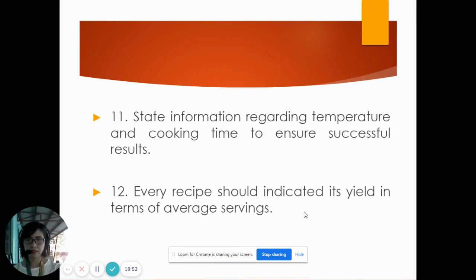Number eleven: state information regarding temperature and cooking time to ensure successful results. For example, bake for 25 minutes at 350 degrees Celsius until it is golden brown. This is applicable when you bake a cake or bake bread.